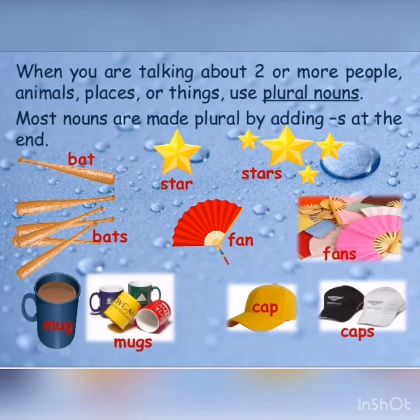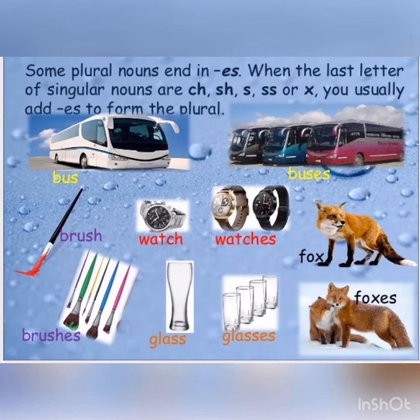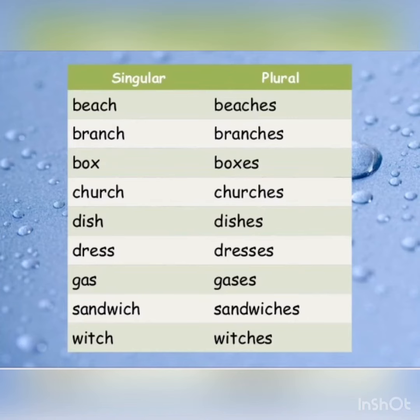Plural nouns refer to two or more people, animals, or places. Examples include birds, brooms, and camels. Some plural nouns end in '-es', such as buses and branches.